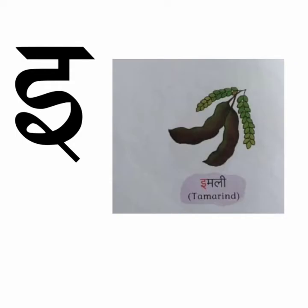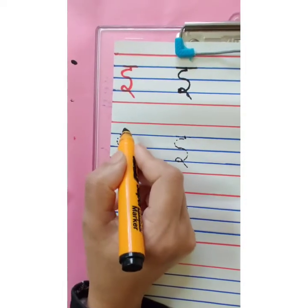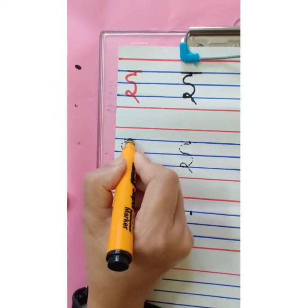E se imli. Imli means tamarind; it is sour in taste. Now let's learn how to write Chhoti E. Start with the first blue line — small standing line.